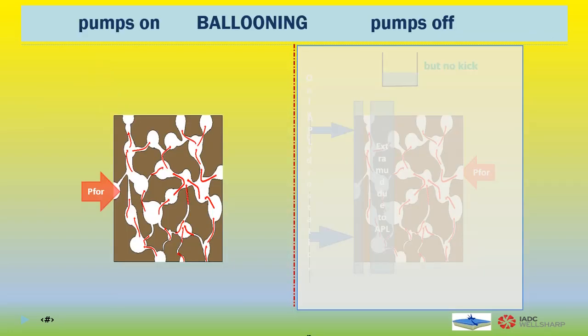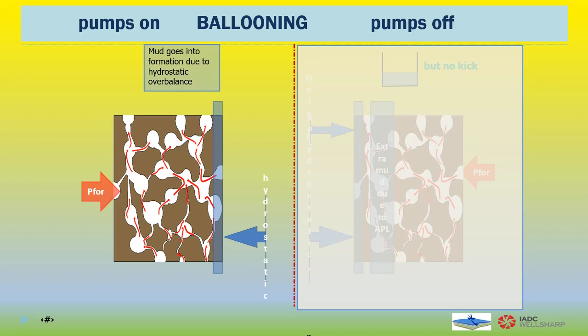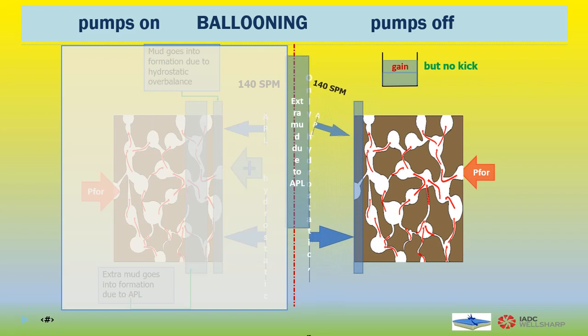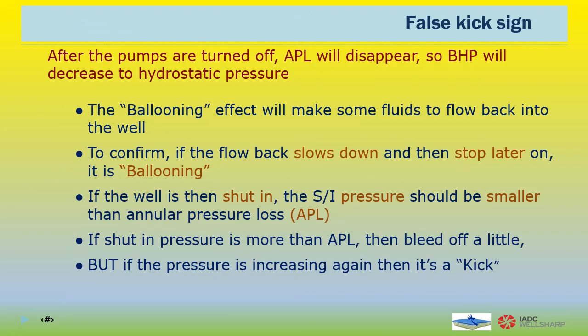What is ballooning? With over-balanced hydrostatic pressure, some amount of mud will penetrate the permeable formation, especially when encountering high-permeability formations. When the pumps are running at 140 SPM or more, the annular pressure loss will push the extra mud into the highly permeable formation. When the pumps are turned off, the extra mud that had been pushed into the permeable formation will come back into the hole, and we observe flow or gain at surface — but it is not a kick. After the pumps are turned off, annular pressure loss will disappear, so the bottom-hole pressure will decrease to hydrostatic pressure. The ballooning effect will make some fluids flow back into the well. To confirm — if the flow back slows down and then stops, it is ballooning.